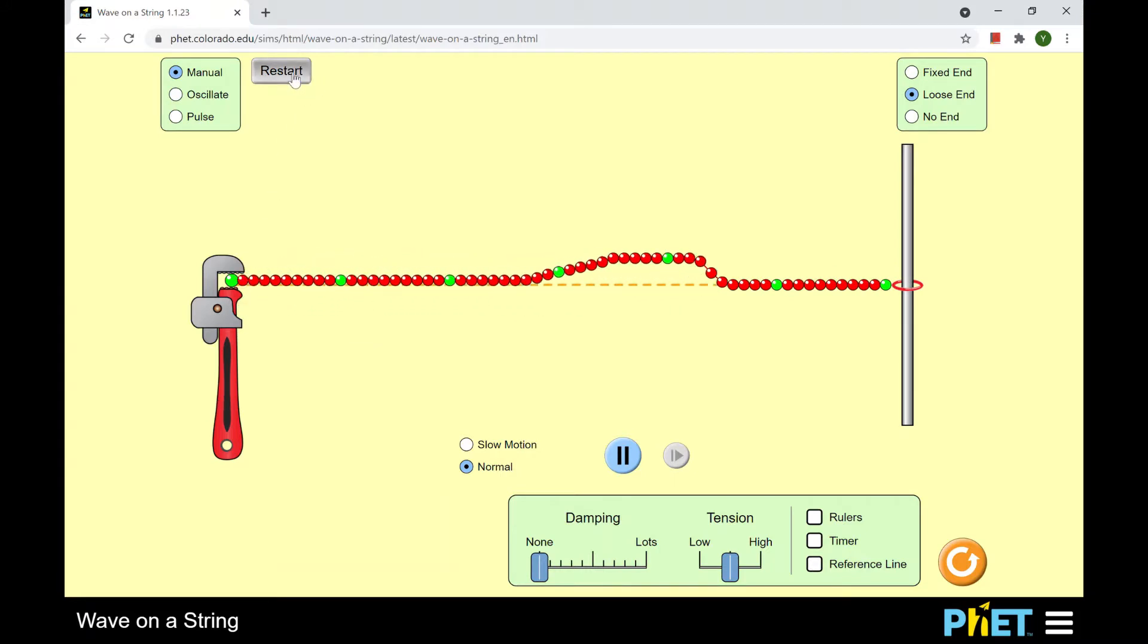So in order to make the first standing wave, you have to move the wrench down when the wave reflected back. So it's like this. Move it up. So it's like this.